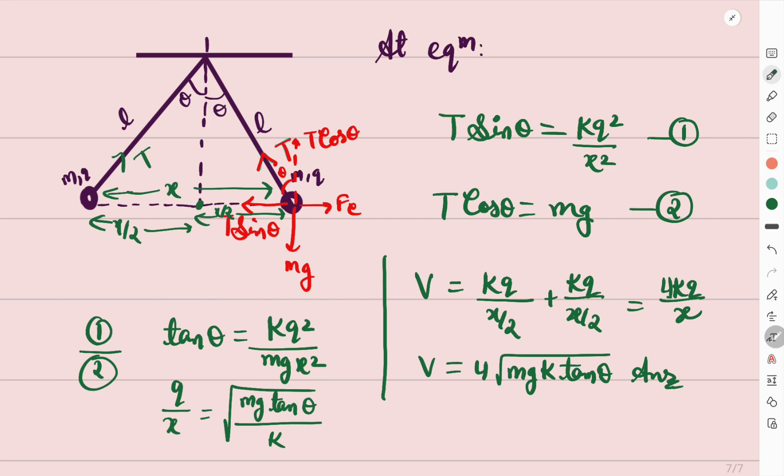kq/(x/2) aur kq/(x/2) - scalar quantities hain, directly add ho jayengi, to 4kq/x aayega. So yahan pe already q/x ko likh sakte hain √(mg tan θ/k). So V will be 4√(mgk tan θ).